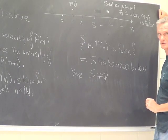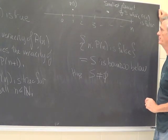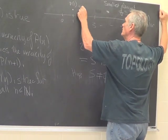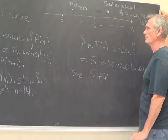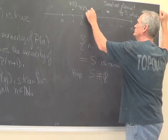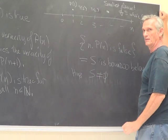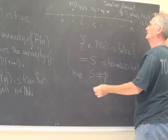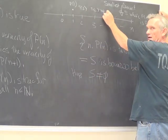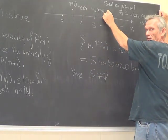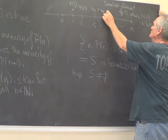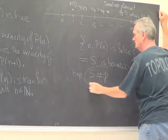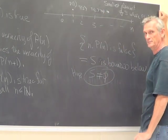What is that smallest element? Well, P of one is true. And since P of one implies P of two, P of two is true. P of two being true implies P of three is true, and so P of four is true. In fact, everything before the supposed least element was true — so that element can't exist. The contradiction is that S cannot be non-empty, and that's why induction follows from the well-ordering principle.